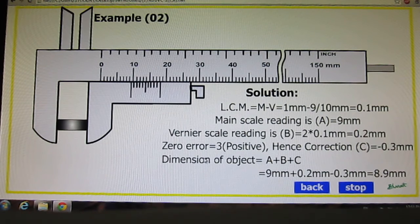Zero error is 3, that is positive. Our correction C is 0.3mm. That value is negative because whenever positive error is there, we have to correct with minus sign.